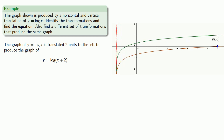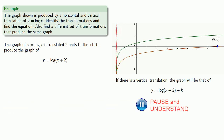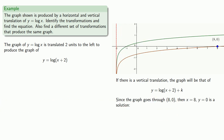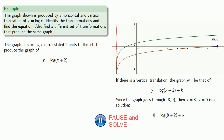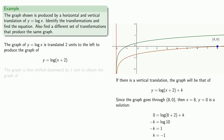If there's a vertical translation, the graph will be that of y equals log of x plus 2 plus some constant k. Since the graph goes through (8, 0), then x equals 8, y equals 0 is a solution, which means we can substitute these values in and solve for k. We find k equals negative 1, and so the graph is shifted downward by 1 unit.